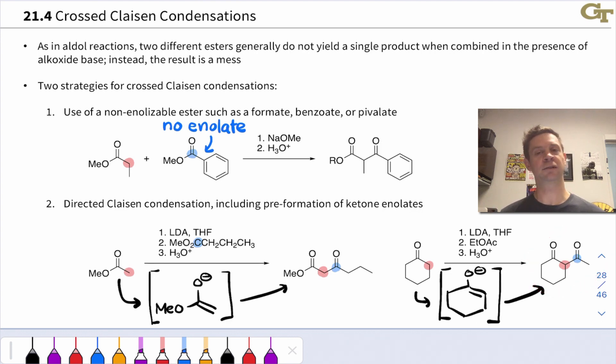So you can use this directed Claisen method to preform a ketone enolate and then end up with a 1,3-dicarbonyl ketone this way.